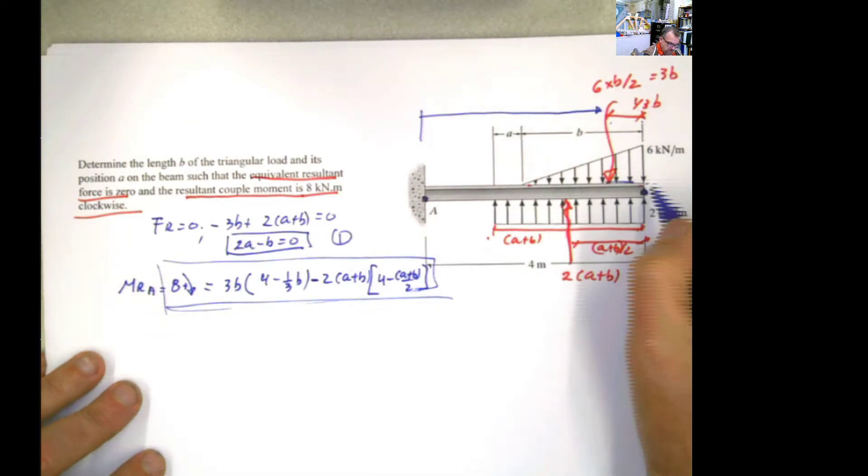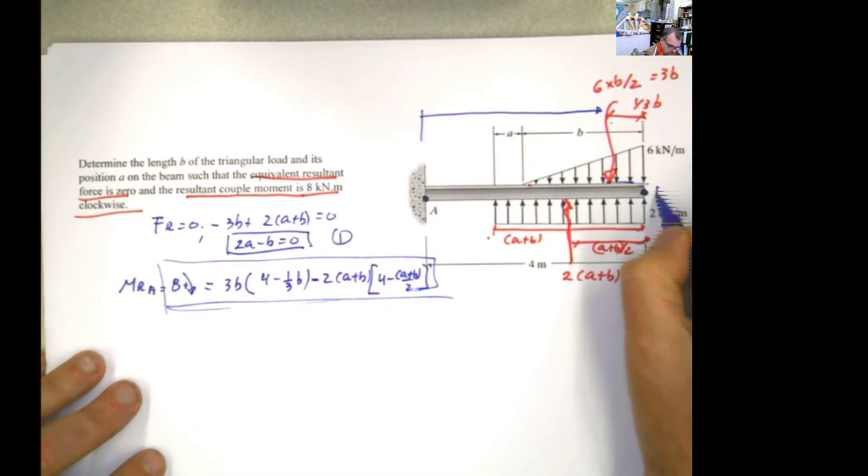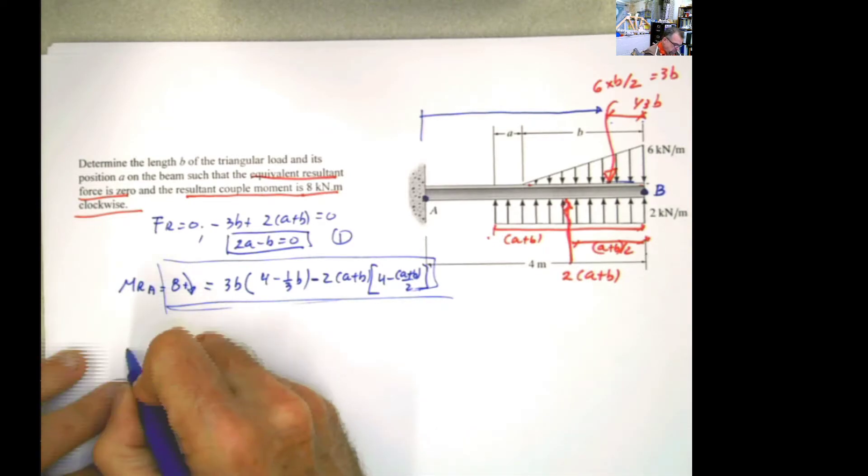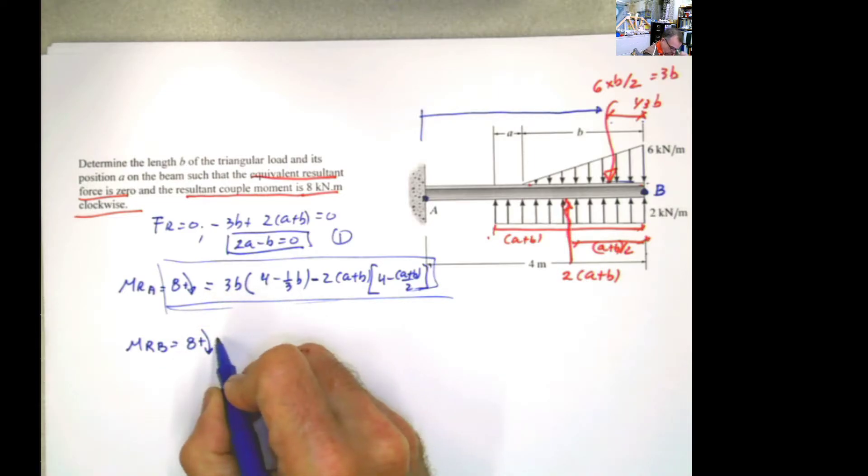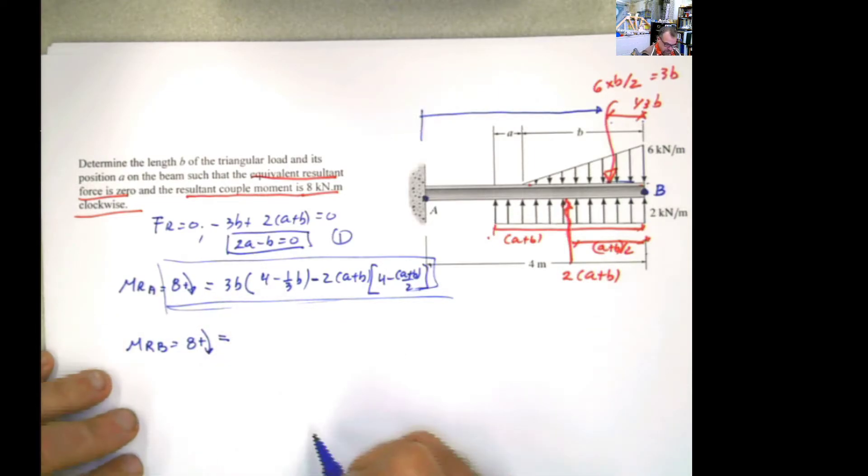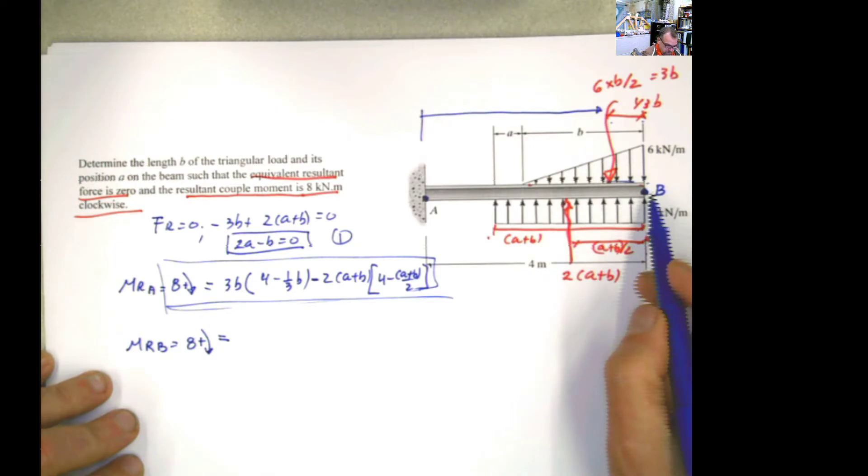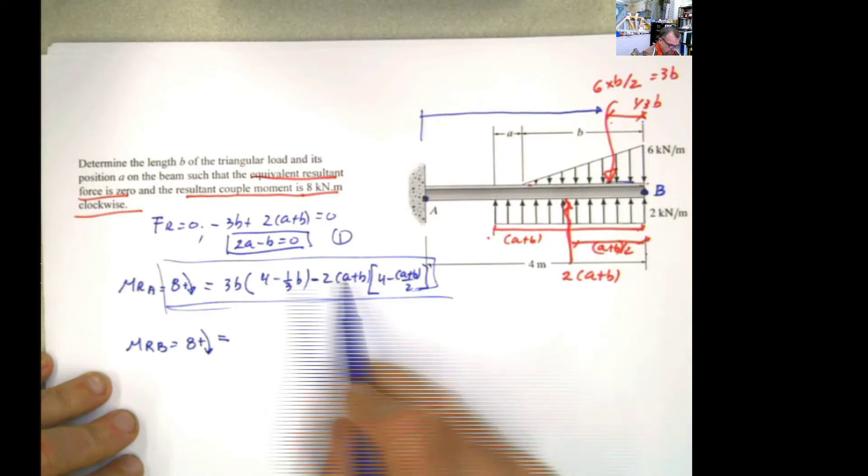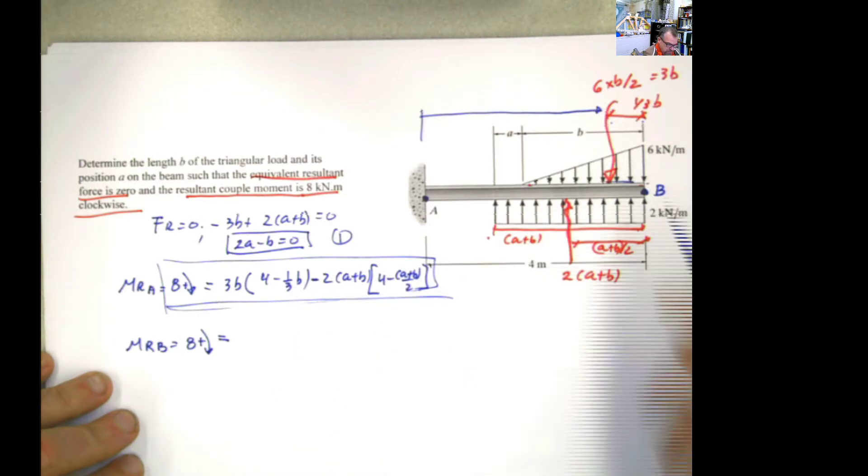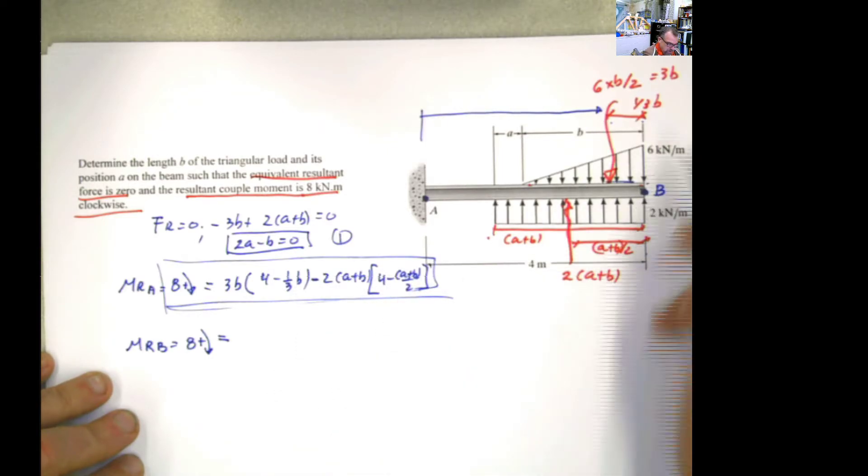Now, why with respect? Oh, I don't have any label there. But now I do. I'm going to do moment with respect to b. And it has to be 8 positive, or clockwise. Why I'm doing it with respect to this point? Because I realize the distances are easier. They don't have this 4 minus here. It's just from this point. So I'm going to do that.